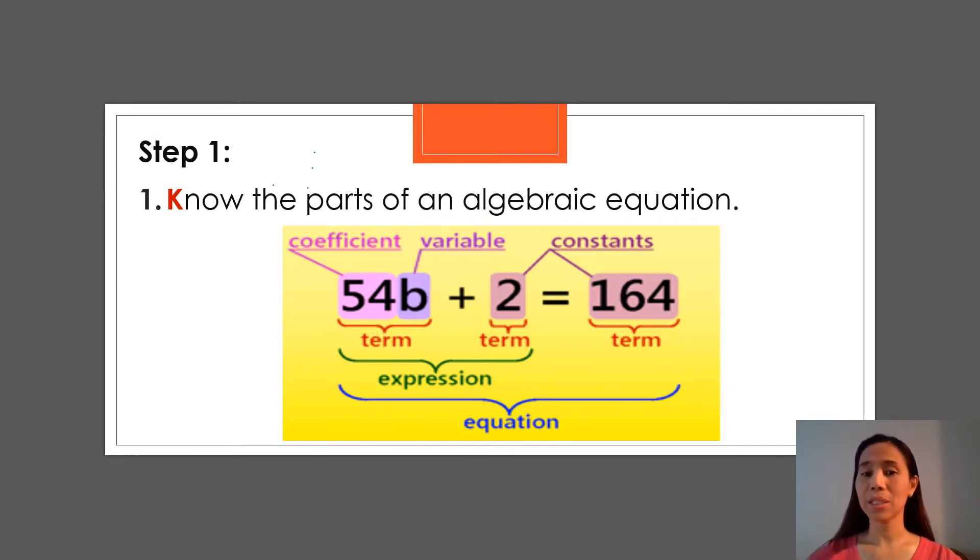So that's easy to remember, right? If we only have 54b + 2, that is called an algebraic expression. However, if we have 54b + 2 = 164, that is already called an algebraic equation because we have the equals sign. So remember the parts: coefficient, variable, and constants.